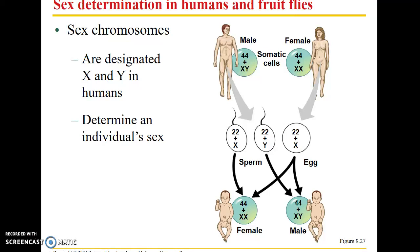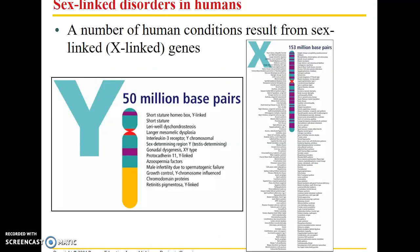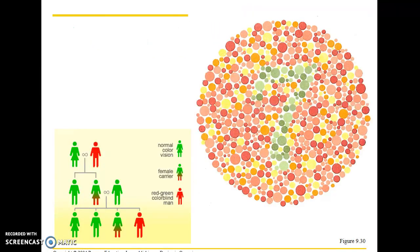Sex determination differs by species — it's not always X and Y, and it's not always females that share the same chromosome designation. There are a number of sex-linked disorders in humans that result from sex-linked genes. The X chromosome is much larger physically, providing more space for various traits, while the Y chromosome is much smaller. This means males are far more susceptible to sex-linked disorders: if a male inherits a disease-causing recessive allele on his X chromosome, he has no second X chromosome to provide a normal allele to mask the recessive effect.